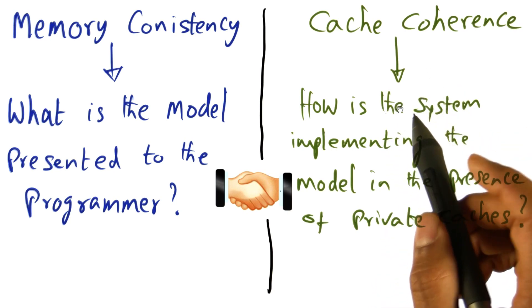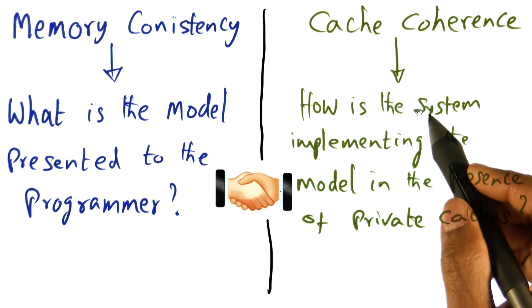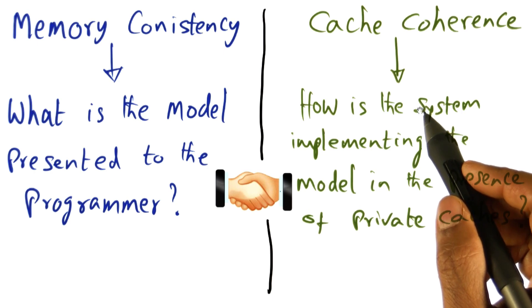That's one possibility. And that is what is called a non-cache coherent shared address space multiprocessor, meaning that there is shared address space that's available for all the processors.